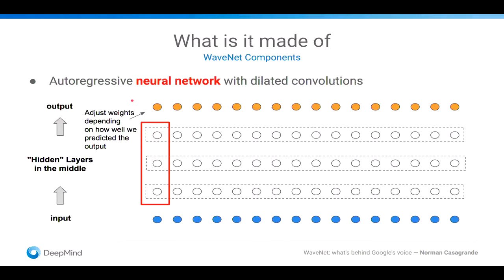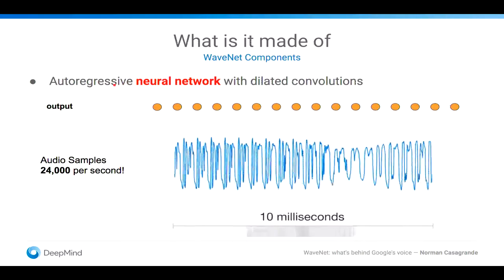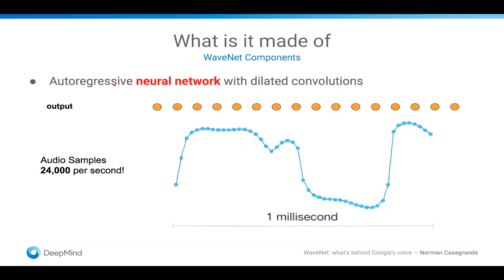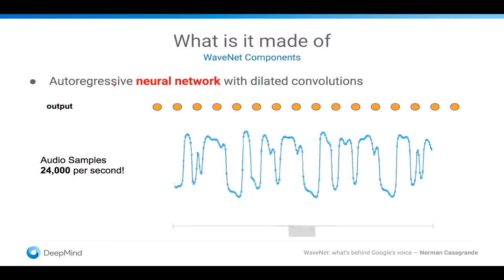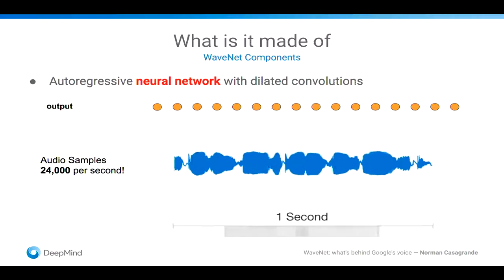And then this top is what you're trying to predict. And basically, depending on how well your prediction is, you adjust your weights, which were these hidden parts here, to make sure that the next time you run with the same example, you're actually closer to the output there. Now, what are those outputs for WaveNet? Well, those outputs are the samples.